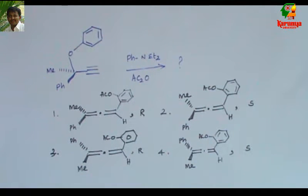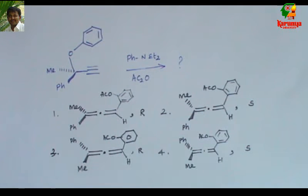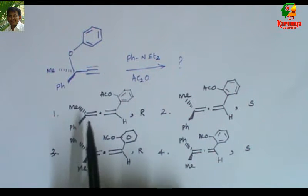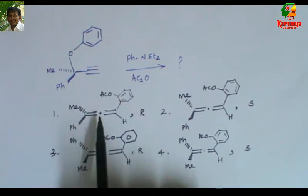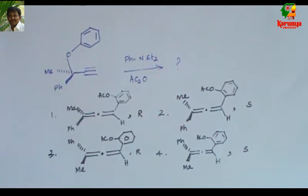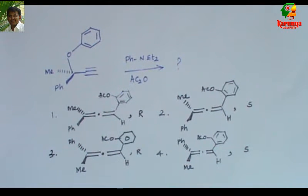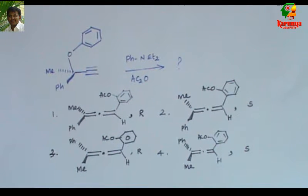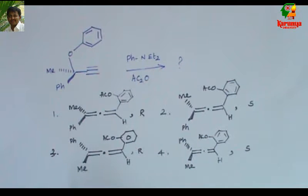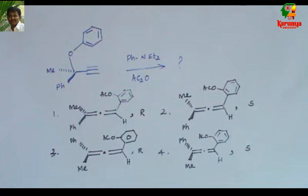The given options — you can find all four options — they are allenes. So two double bonds connected by a carbon: that is called an allene. Which product will form and what will be the stereochemistry of that allene?